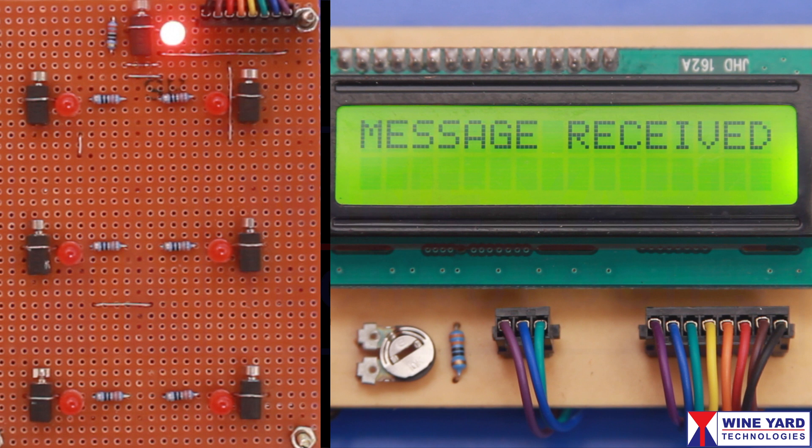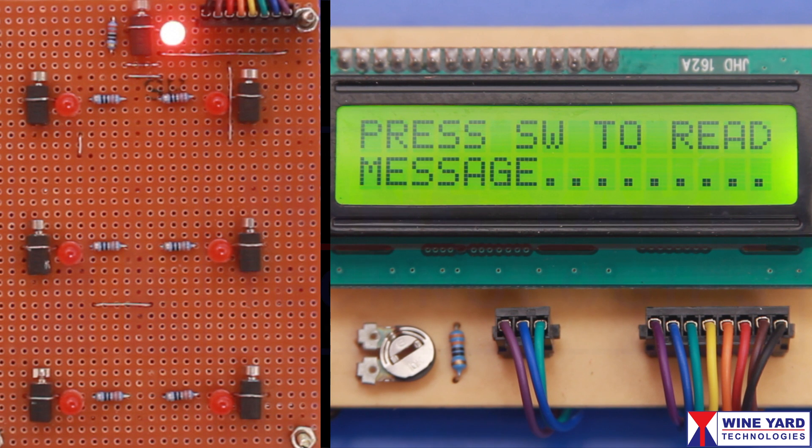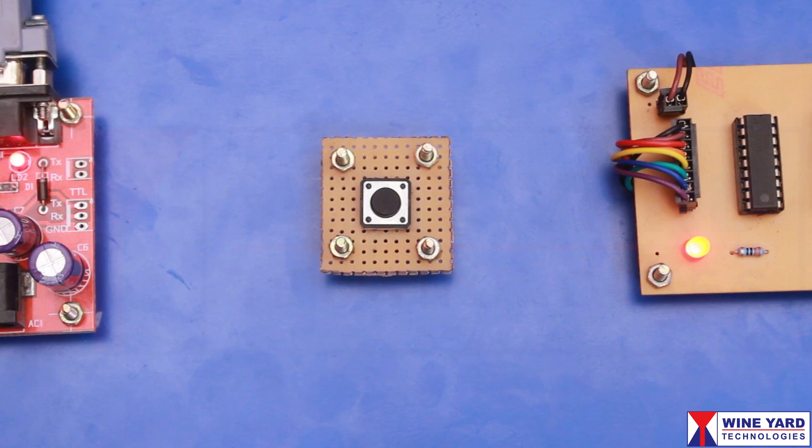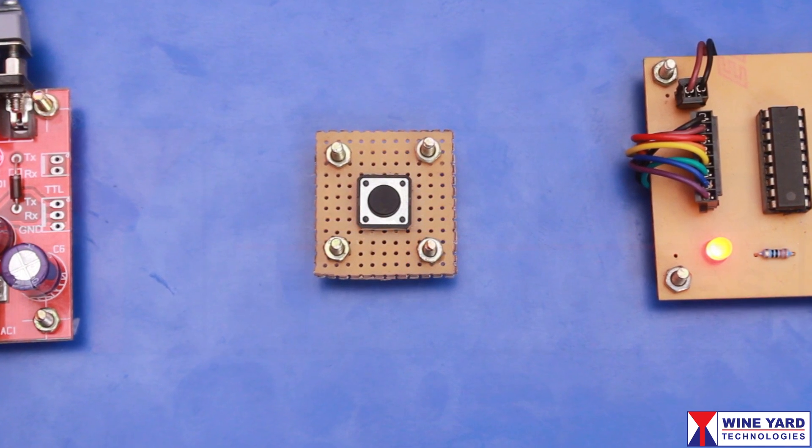Now you can observe the system gives an audio alert along with the vibration sense to the user. Now you can read the SMS character by character by pressing this switch.